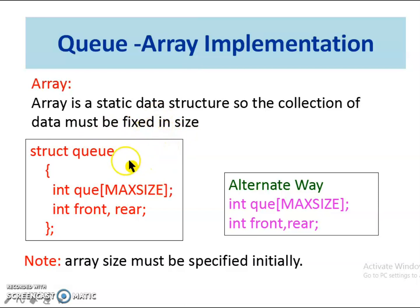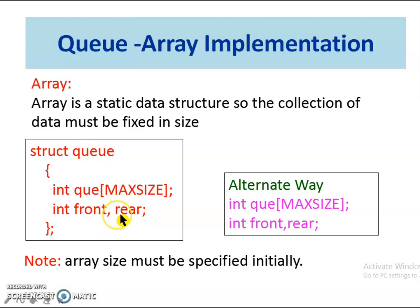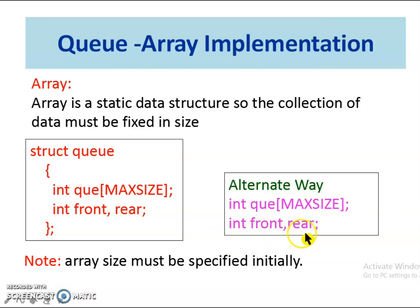In array implementation, the structure of the queue is defined as: struct queue { int queue[MAX_SIZE]; int front, rear; }. Here, the queue is declared as an array with max size and associated with it the variables front and rear, which point to the beginning and the end of the queue respectively. The queue can be represented in an alternate way without a structure, like int queue[MAX_SIZE], int front and rear. But here, front and rear are just variables not associated to the queue. This alternate way can be used when we write simple programs with one queue.